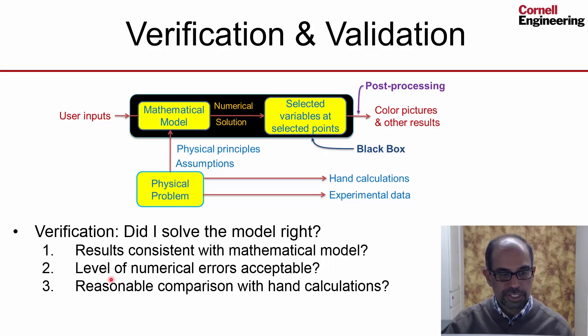The third category of checks is looking at whether we are getting a reasonable comparison with hand calculations. So it's looking whether the results are comparable to your expectations from hand calculations. You can see that there is judgment involved, right? Engineering judgment involved. What is acceptable? What is reasonable? And so on. And that's something you will get as you get more experience. But one can get into this habit of checking these things right off the bat, and that's what we're going to do.